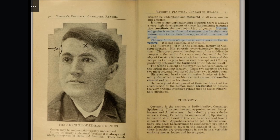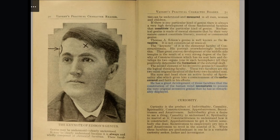Thomas A. Edison's genius is well known as the inventive — it is not commercial or musical. The keynote of it is the elemental faculty of constructiveness. His portrait overwhelmingly indicates this. That great convex development of the middle side temples is the result of a very strong degree of the faculty of constructiveness. The second element of his inventive genius is causality, the logical thinking faculty. These two faculties are the two most original faculties of the 42-facultied soul. His eyes and head show an active faculty of spirituality also, which gives him a consciousness of the undiscovered and faith in his efforts.